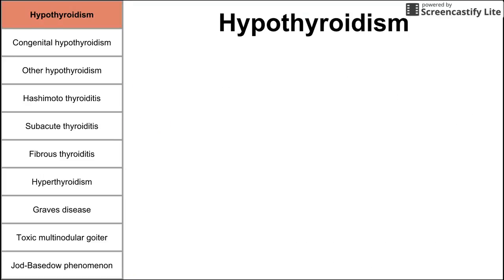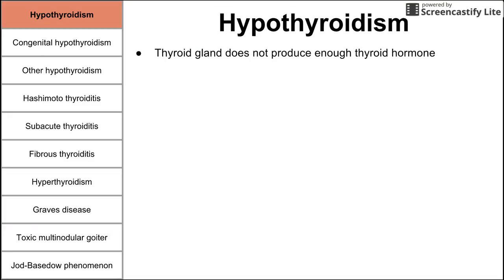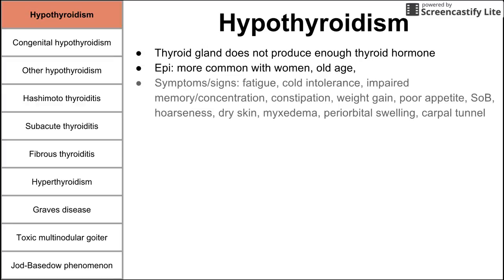Starting with a brief description of hypothyroidism: it's when the thyroid gland does not produce enough thyroid hormone. The epidemiology here is that it's more common in women, and it's more common as you get older.